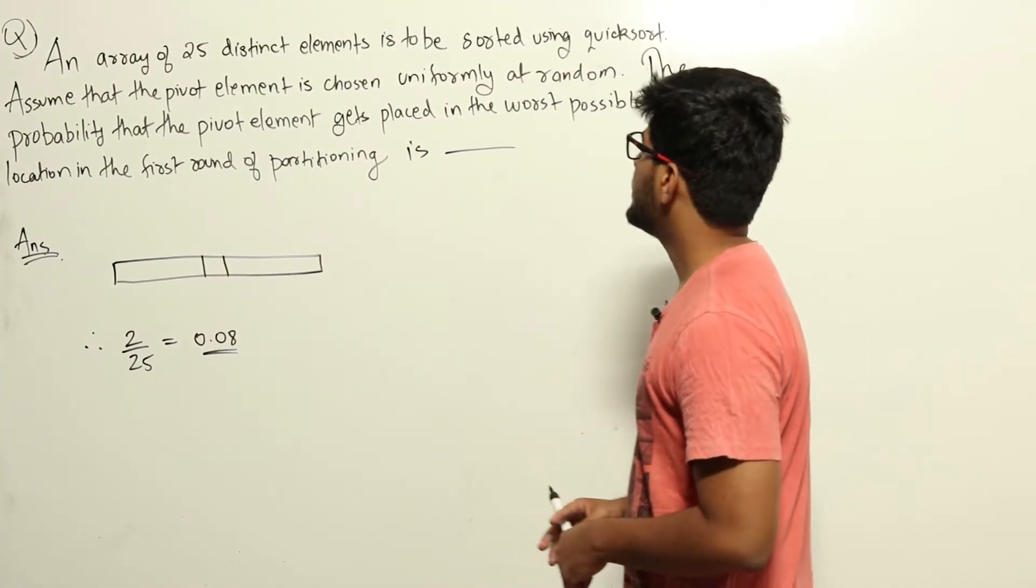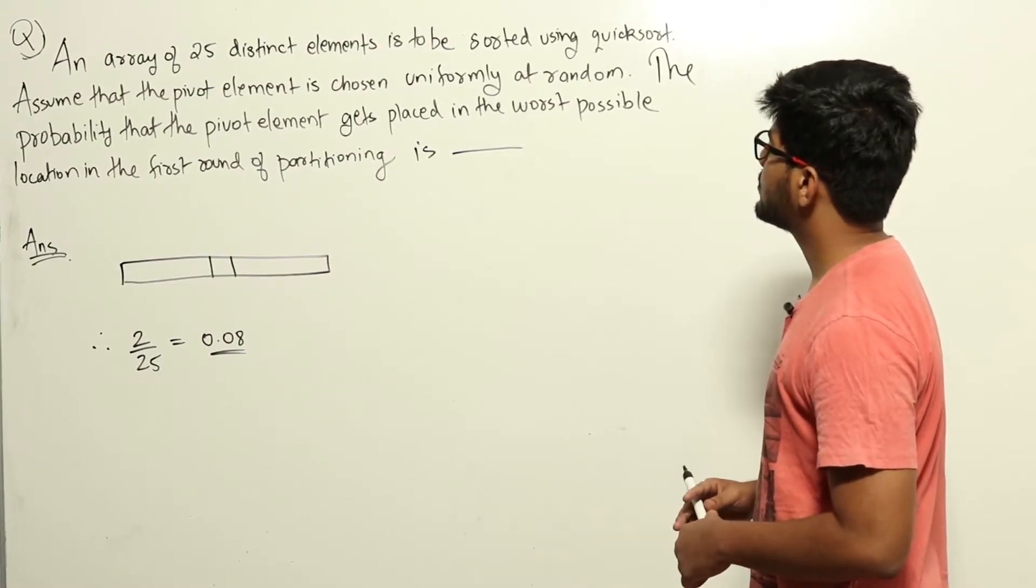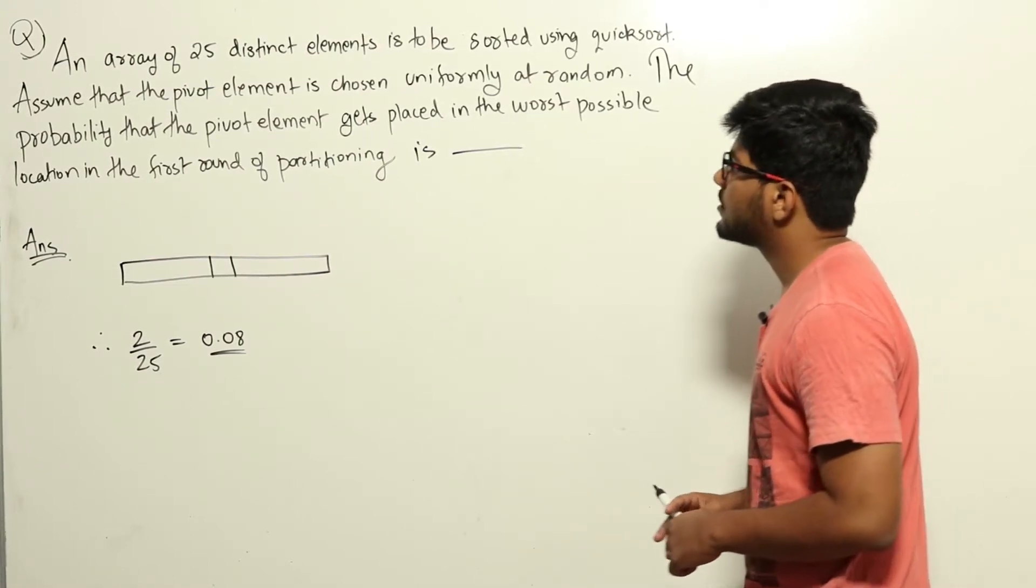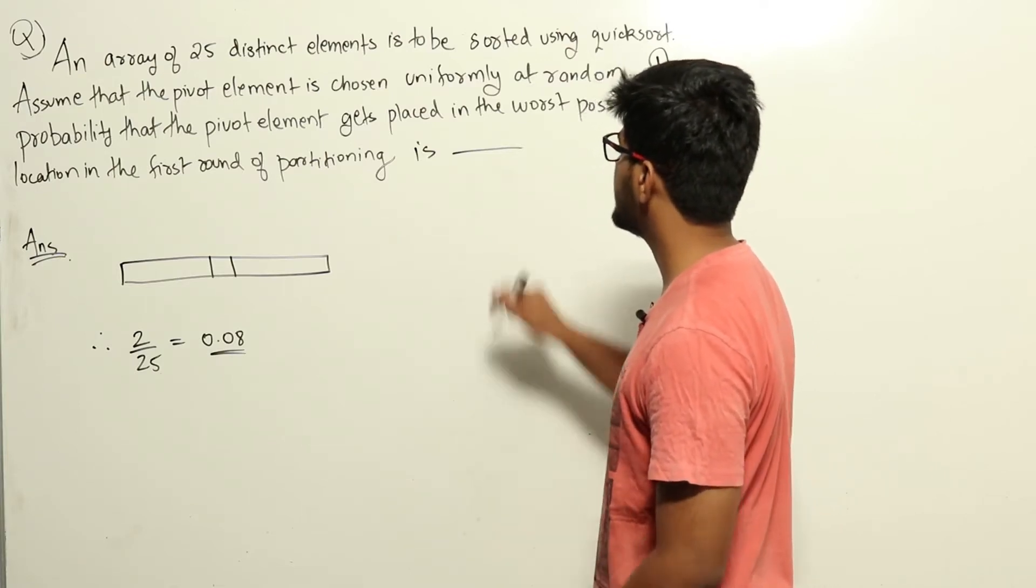An array of 25 distinct elements is to be sorted using quicksort. Assume that the pivot element is chosen uniformly at random. The probability that the pivot element gets placed in the worst possible location in the first round of partitioning is dash.